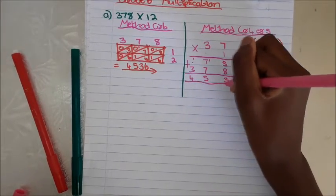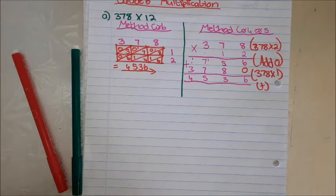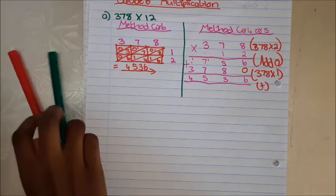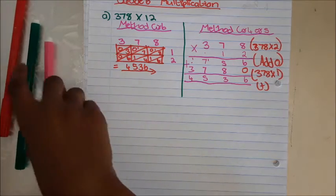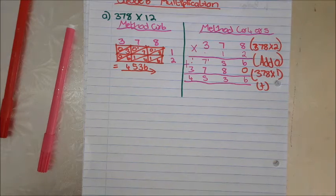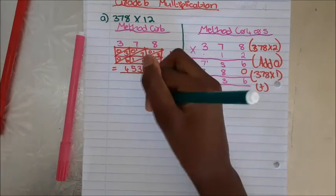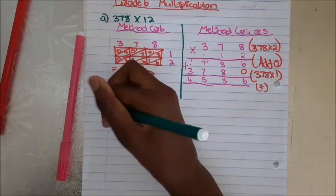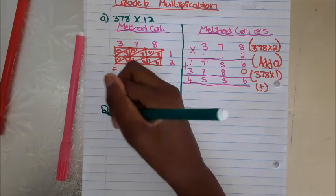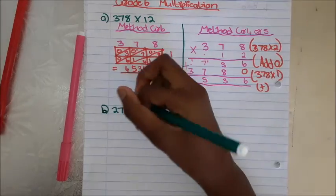Well done for doing this with me, but I'm not quite done yet. For you to understand everything, I need to do all 5 sums with you. I already did one. Now I'm going to do the second one. Sum B — let's skip a line. Let's say 27 times 28.